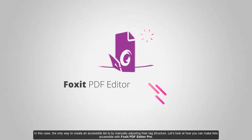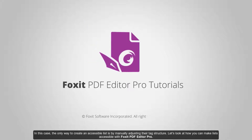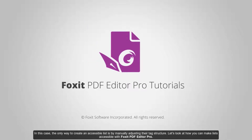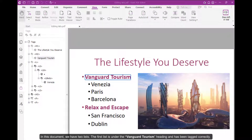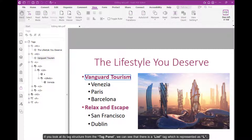Let's look at how you can make lists accessible with Foxit PDF Editor Pro. In this document, we have two lists. The first list is under the Vanguard Tourism heading and has been tagged correctly. If you look at its tag structure from the Tag panel, you can see that there is a list tag, which is represented as L.